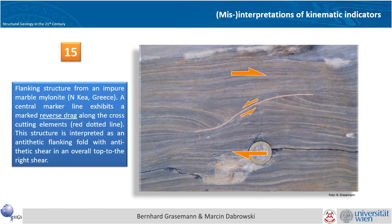Again, a maybe complicated structure, because at first glance this looks like a shear band which would give you a top-to-the-left shear sense, but if you look at the central marker lines which make this very pronounced reverse drag here, and also this nice reverse drag on the other side, this might be better interpreted as an antithetic A-type flanking fold, which would give you a top-to-the-right shear sense.